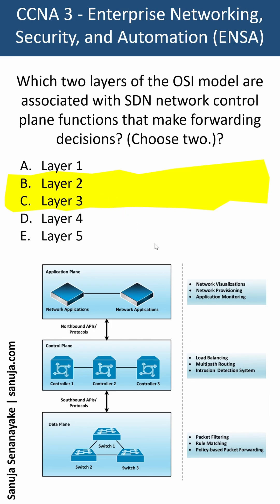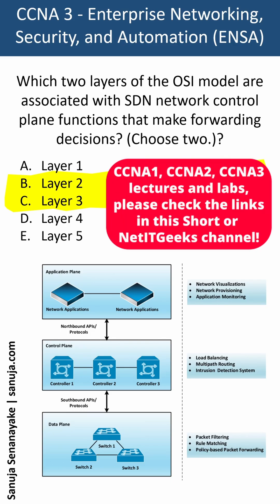Therefore, layer 2 and layer 3 are basically part of the control plane, as the data plane takes packet filtering, rule matching, etc., and the application plane takes network virtualization, network provisioning, etc. So the answer to this question is B and C, based on the SDN network model shown on the bottom of your screen.